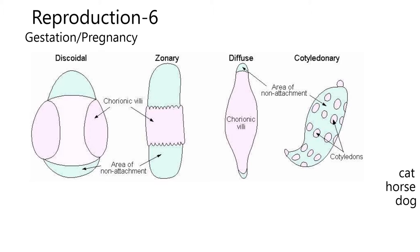The cat and the dog have zonary placentation. That means there's a zone on the placenta where the chorionic villi attach to the corresponding area in the uterus. There's no uterus present in this diagram, but there's definitely a zone, and it goes all the way around 360 degrees for the dog and cat. Dog and cat: zonary.